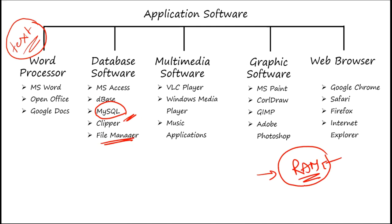Fourth is graphic software. Graphic software is used to perform graphic-related tasks — primarily designing logos, building flow charts, and creating illustrations. Examples include PowerPoint, MS Paint, CorelDRAW, and Photoshop, through which you can make changes to illustrations, make flow charts, and create logos.